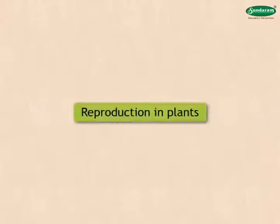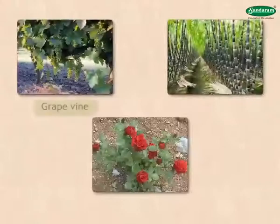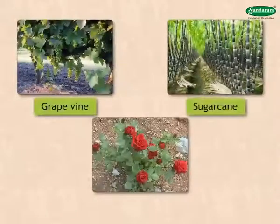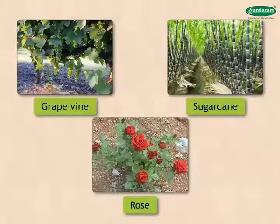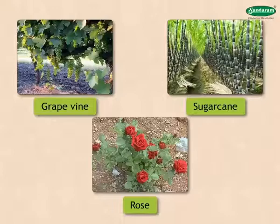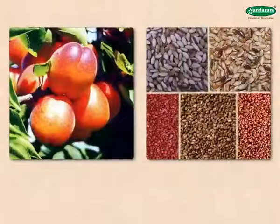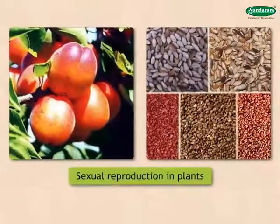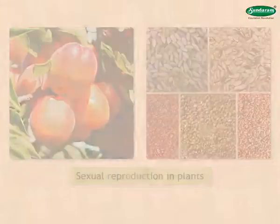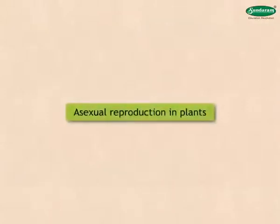Let us see how reproduction in plants takes place. Plants like the grapevine, sugarcane, and rose are produced from their vegetative parts — this is called asexual reproduction. However, fruits and seeds are produced in flowering plants, which is sexual reproduction in plants. Let us first learn about asexual reproduction in plants.